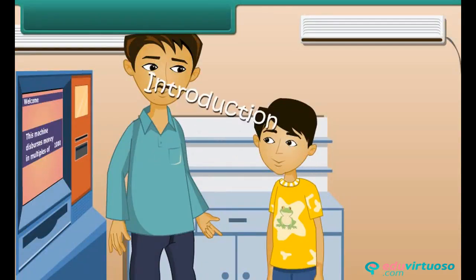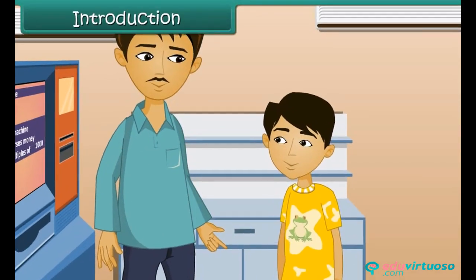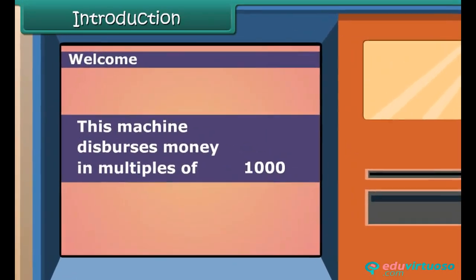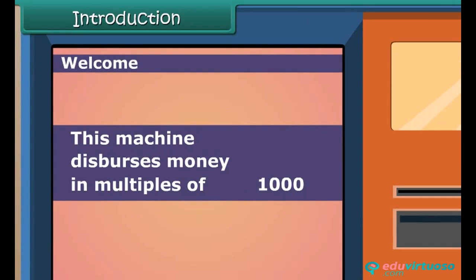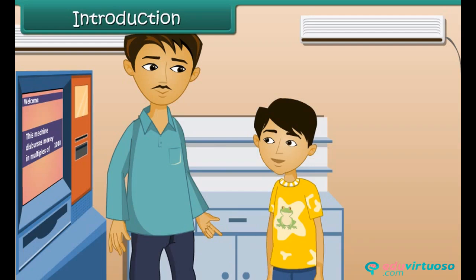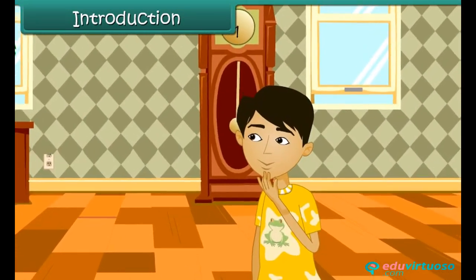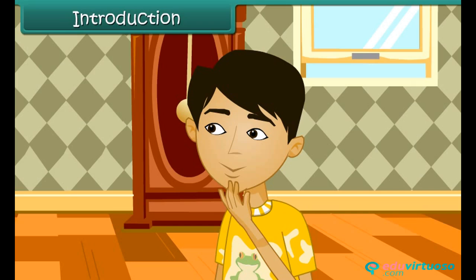You are at an ATM center with your father. You see a message on the screen that says this machine disburses money in multiples of 1000. You ask your father what the message means. He says it means that he can either withdraw 1000 or 2000 or 3000, but not 1500, 2700, or 3800. You return home confused and curious to know more about multiples.